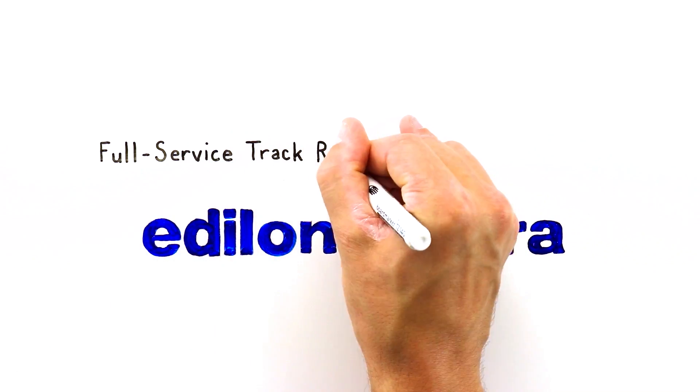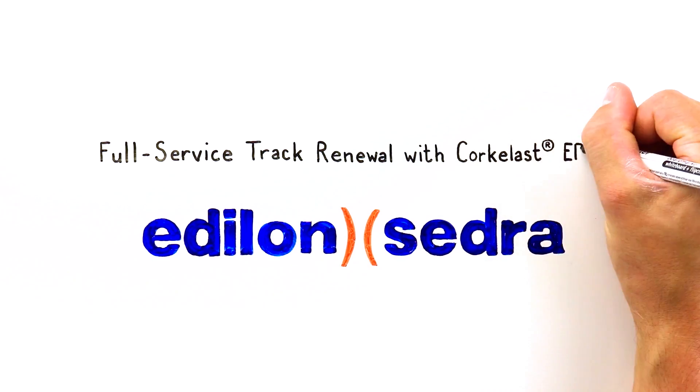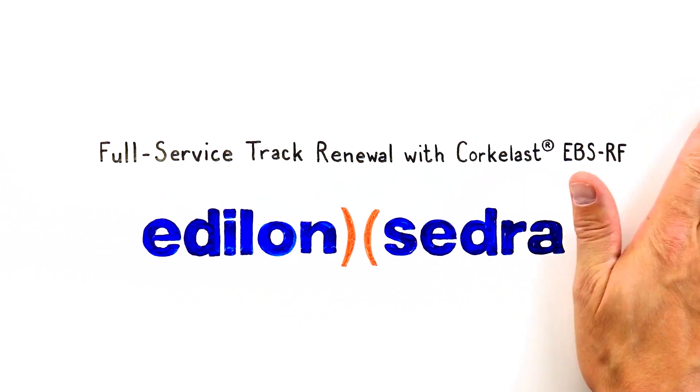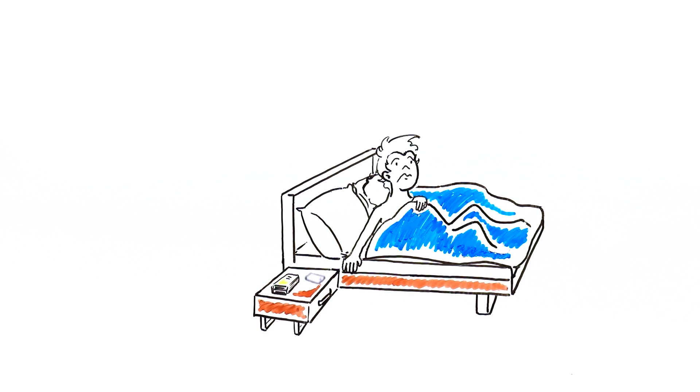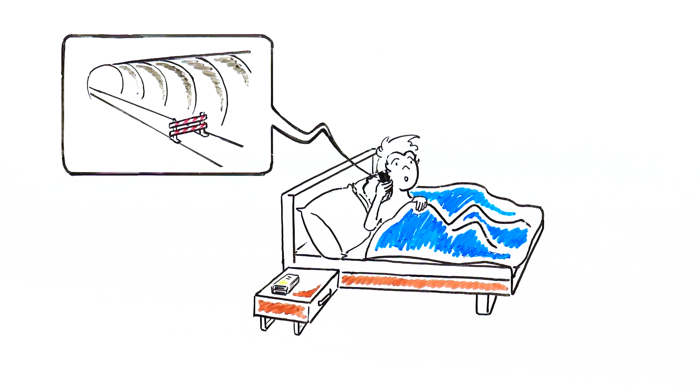Full Service Track Renewal with Corkerlast EBS-RF. Early in the morning, Tim receives a call about a closed metro tunnel.